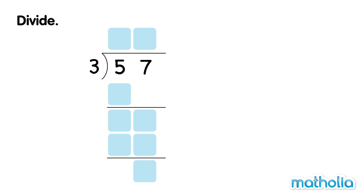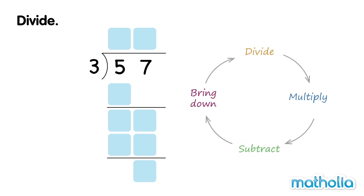Divide. Let's find 57 divide 3. When dividing in columns, we go through steps of dividing, multiplying, subtracting, and bringing down.